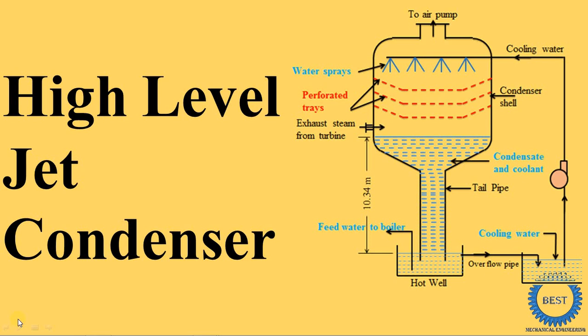In this video, I explain the high-level jet condenser. First, we understand what is the meaning of 'high level.' High level means the height between the cooling water in a cooling water tank or pond to the top of the condenser is greater than 10 meters.